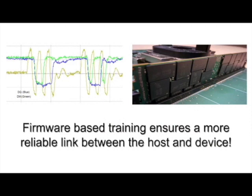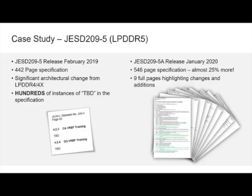How does this compare to hardware-based training? In addition to providing a more reliable and robust link, it also allows an easy path to upgrade. Consider LPDDR5, a standard released just over a year ago — it came out in February 2019 as a 442-page standard with significant architectural changes from LPDDR4 and 4X, yet the specification had hundreds of places that said TBD. Then just in January of this year, they released an updated version — 546 pages, more than 100 additional pages, nine of which highlighted changes and additions to the previous version of the specification.